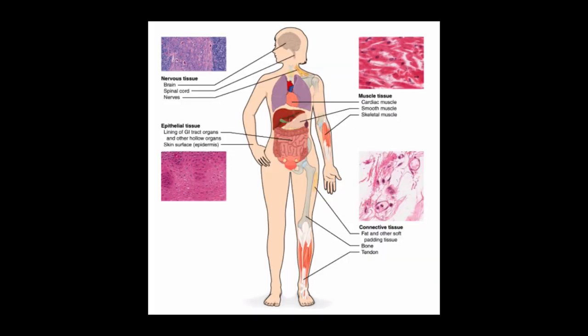Hello and welcome to another video. In this video I'm going to cover the basics of connective tissue in terms of histology. As you probably know, we have four main types of tissue in the body: epithelial tissue, nervous tissue, muscle tissue, and connective tissue. In this video I'm going to mainly focus on connective tissue.